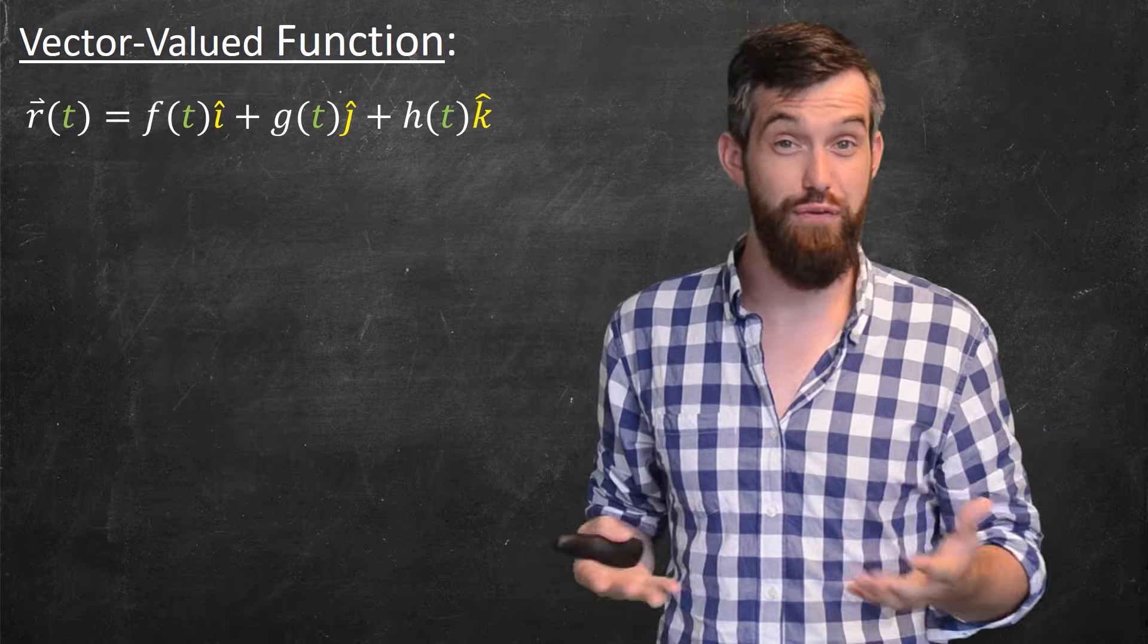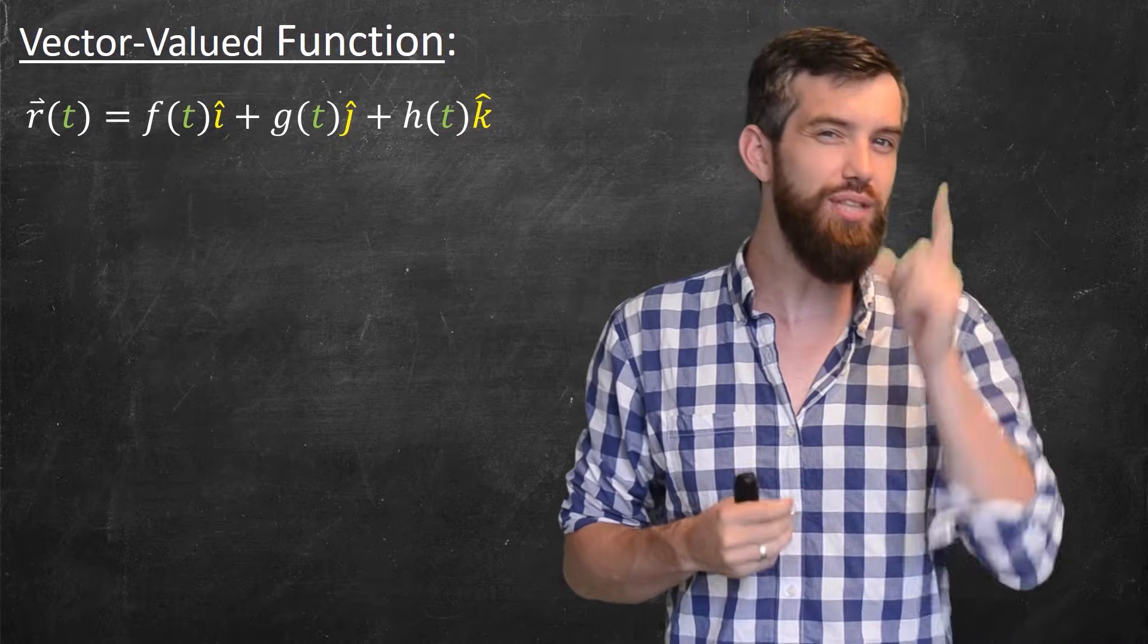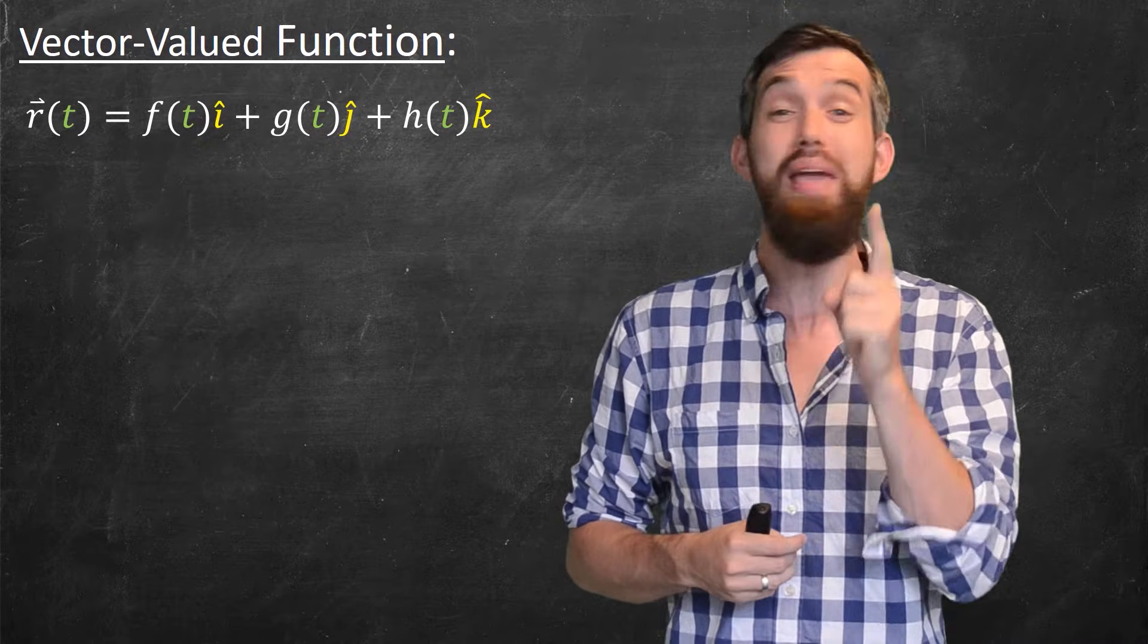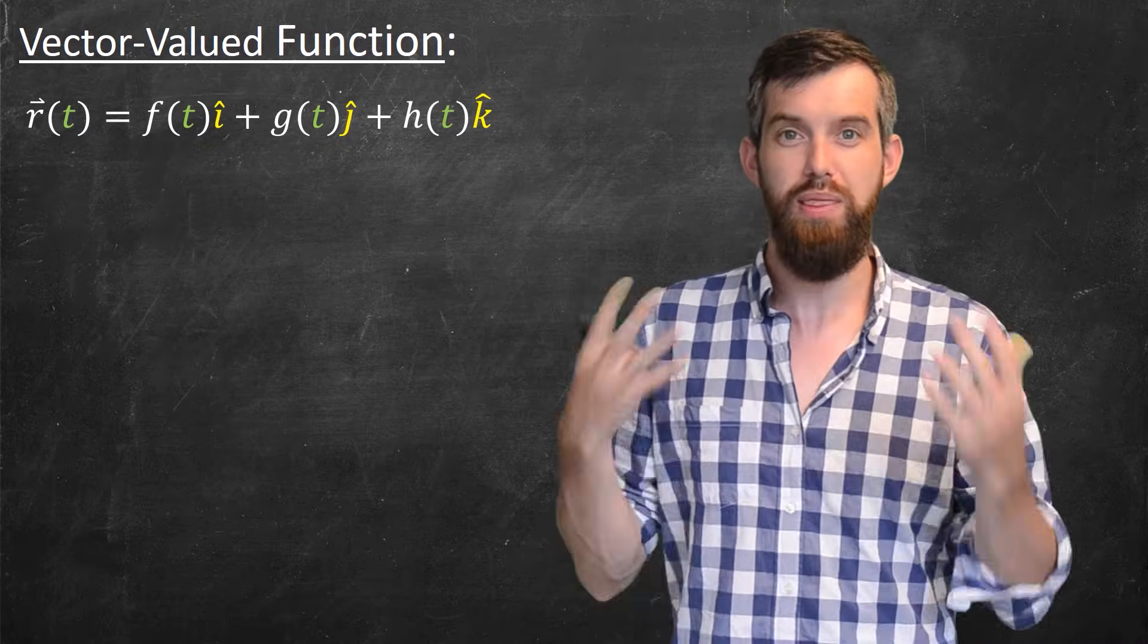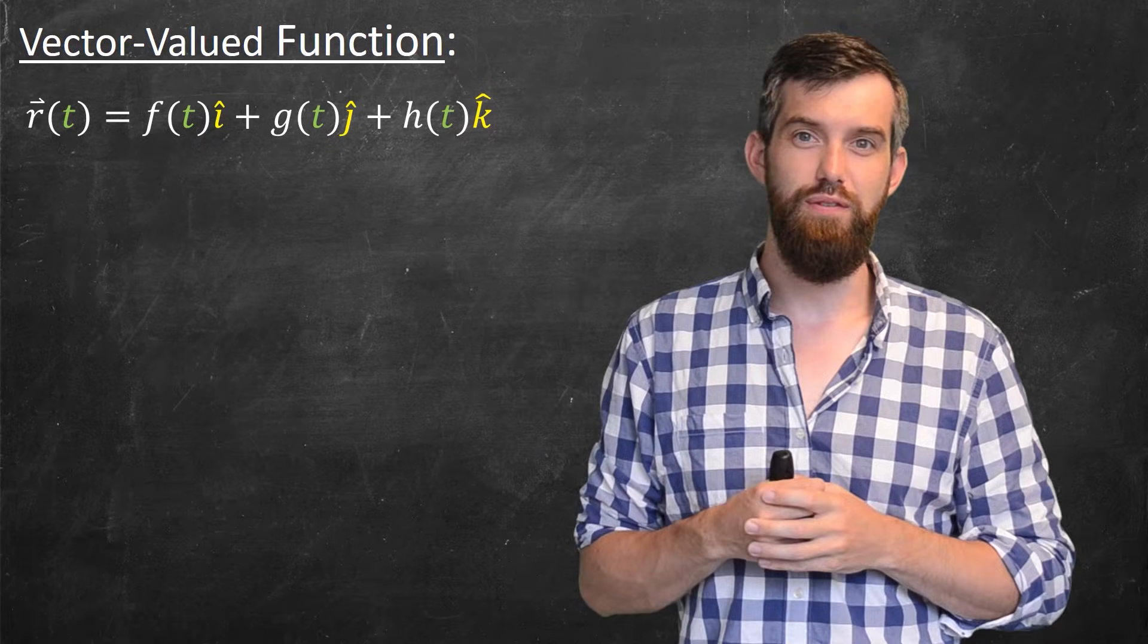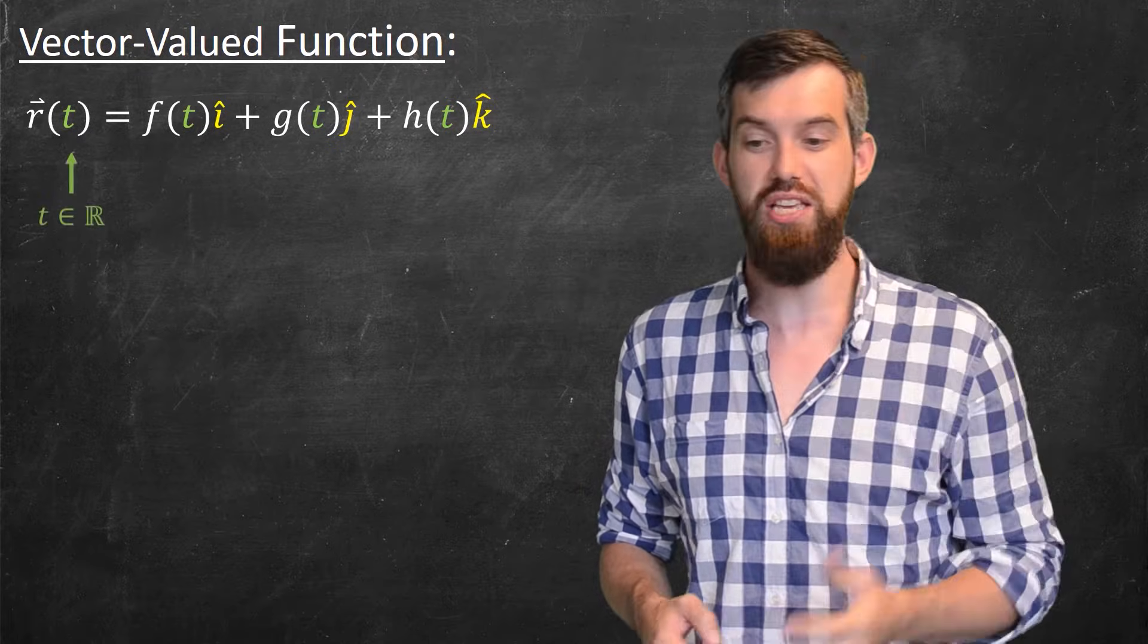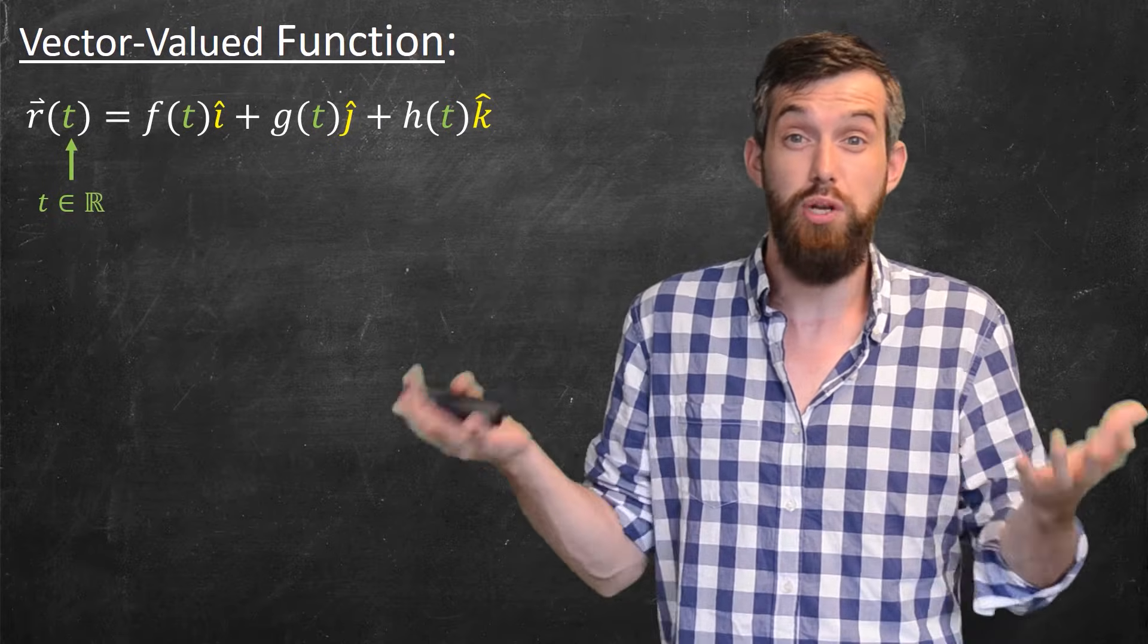A vector-valued function is a function whose output is actually three or more dimensional, and whose input, however, remains just one-dimensional. So in this case, I've got a vector-valued function r of t. The vector-valued function has a single input t, and that t is just some scalar, it's a real number.